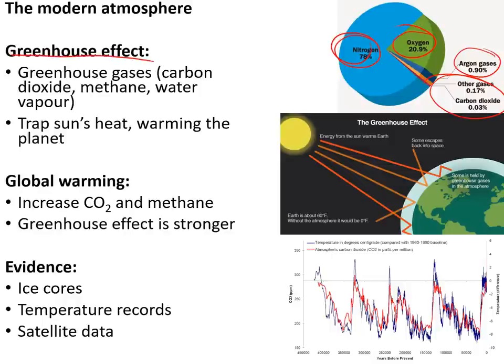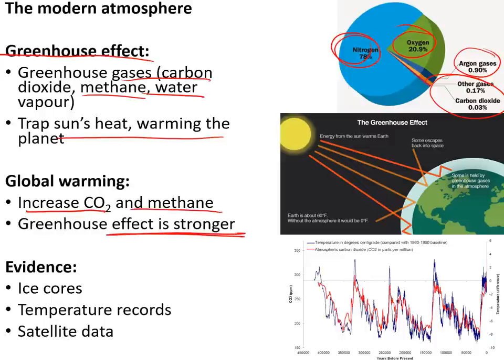The greenhouse effect is the way planet Earth is kept warmer than normal by greenhouse gases like carbon dioxide, methane, and water vapour, which trap the sun's heat and prevent it from escaping. The greenhouse effect itself is a good thing, but because humans are increasing the amount of carbon dioxide and methane in the atmosphere, the greenhouse effect is getting stronger and leading to global warming — evidenced by ice cores, temperature records, and satellite data.